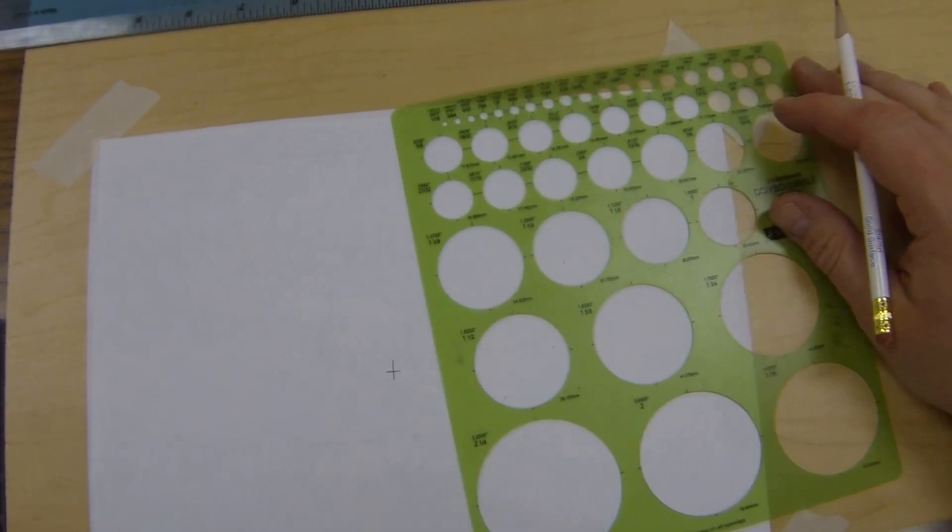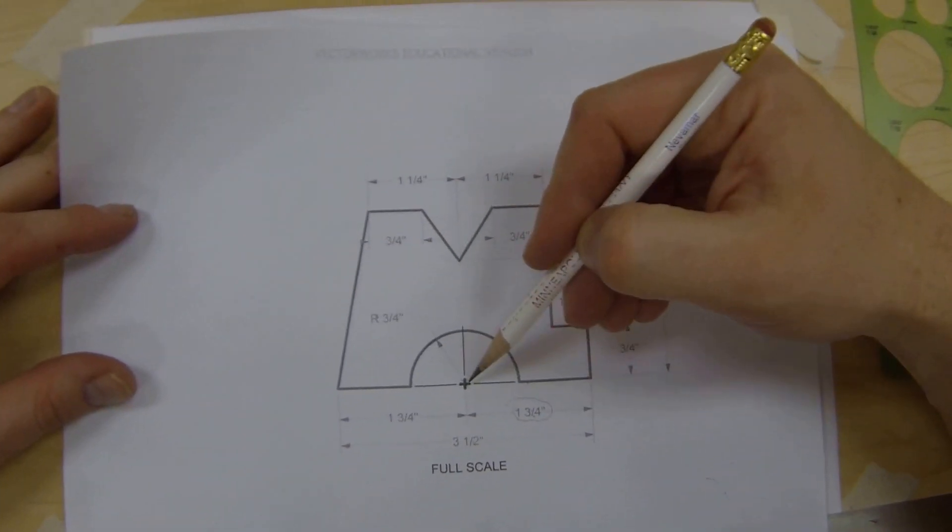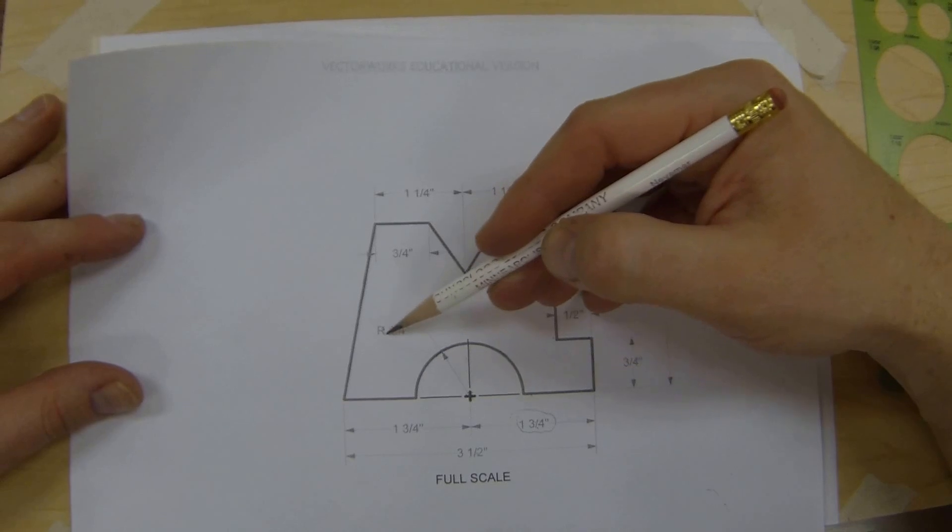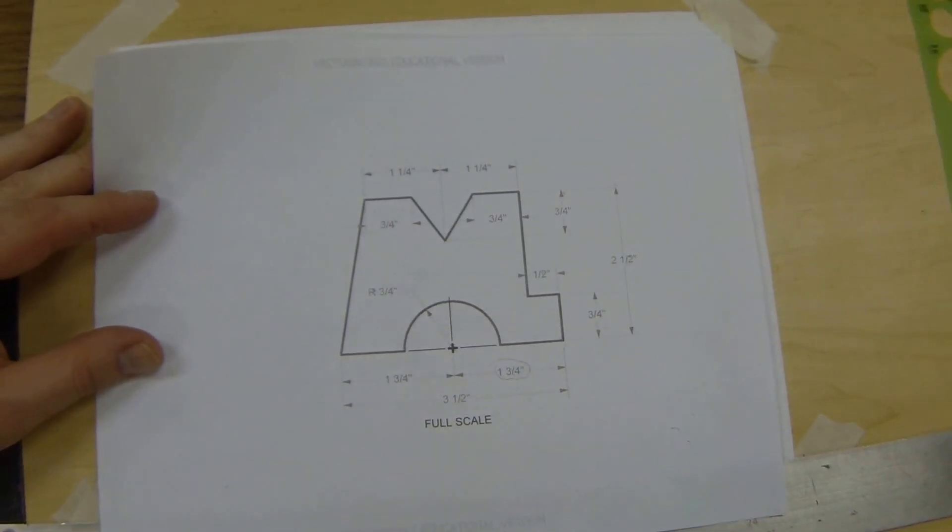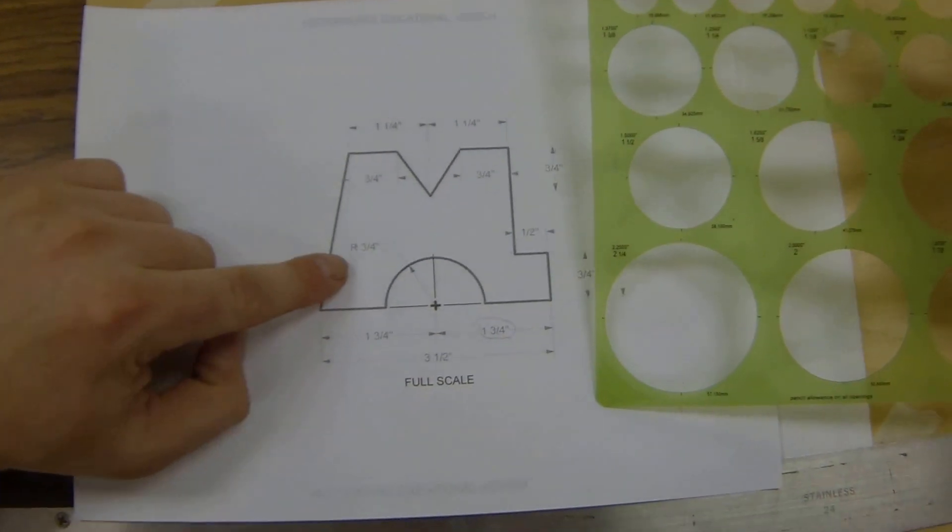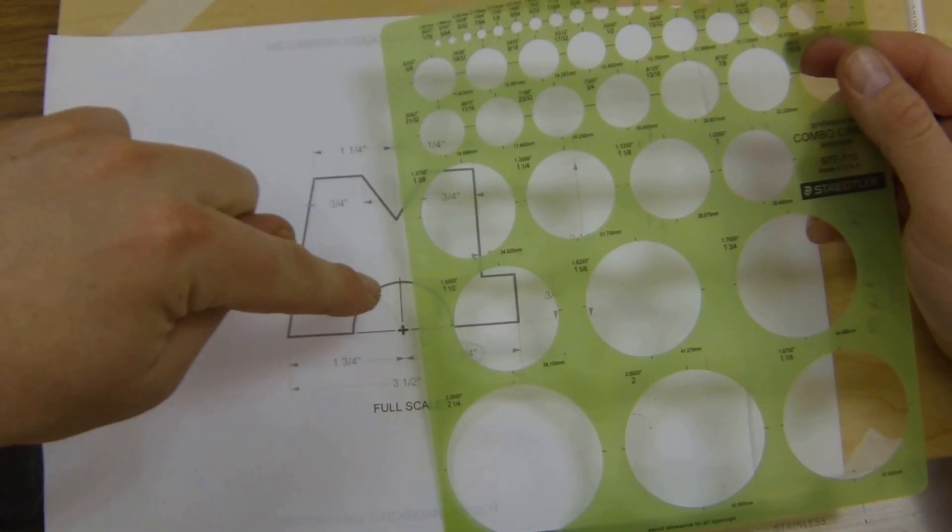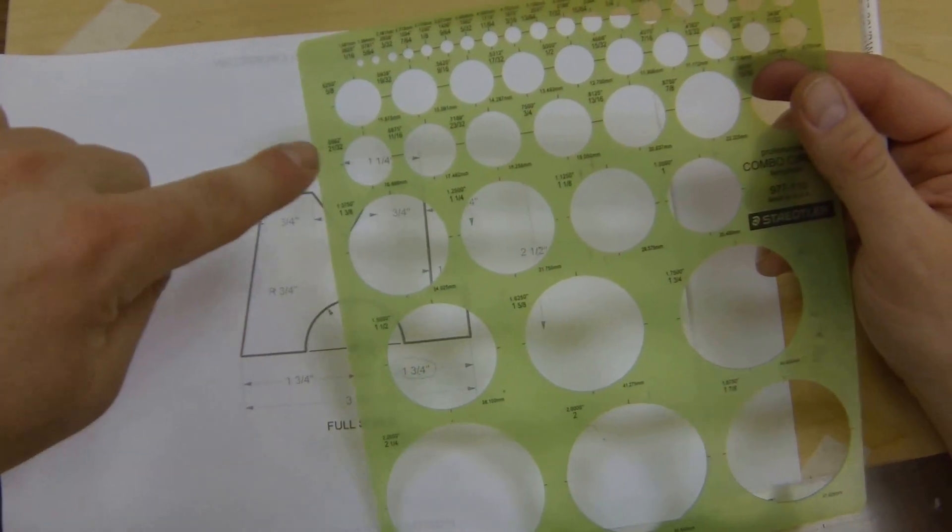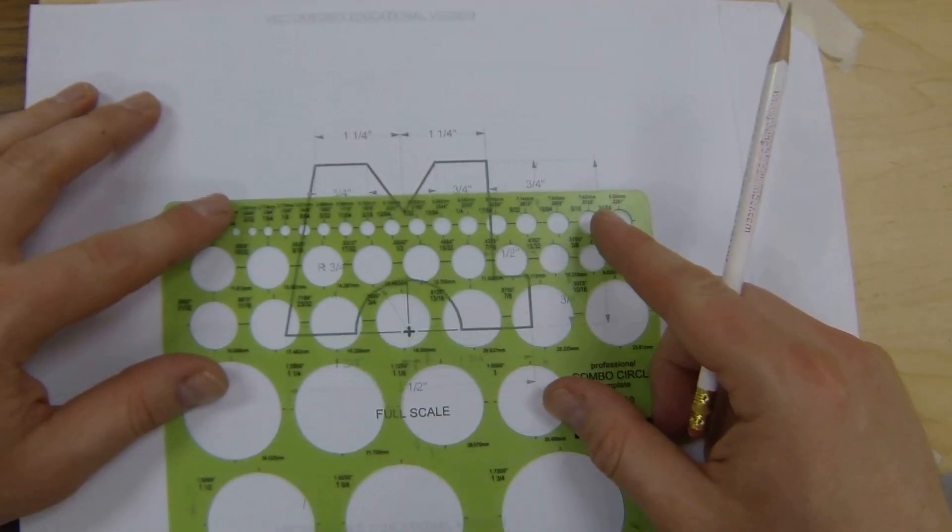With your math in establishing the right tool and correct use for the tool. Coming back to my design here, I have a three-quarters radius. Now for this tool, I need to do some math in order to figure out what circle on this tool I need to choose. If I simply go to the three-quarters and draw a circle...